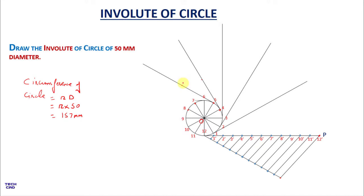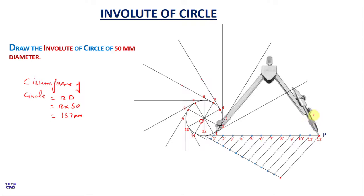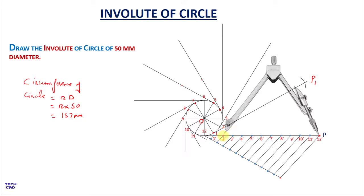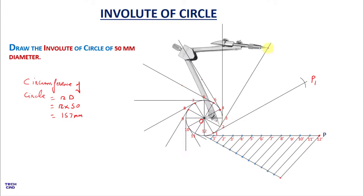Draw the tangents from divisions 6, 7, 8, 9, 10, and 11 in the same manner. Now take a compass, measure the distance from 1-dash to P, place the compass at point 1, and make an arc — name this point P1. In the same way, measure the distance from 2-dash to P, place the compass at point 2, and mark an arc — name this point P2.